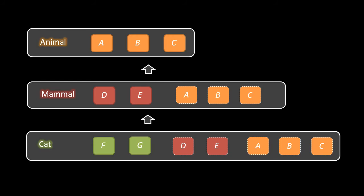We also have the terms Parent and Child. A Parent is a direct, immediate ancestor, and a Child is a direct, immediate descendant. So Animal is a parent of Mammal and Mammal is a child of Animal, but Animal is not a parent of Cat — nor Cat a child of Animal — because the inheritance in that case is not direct, only indirect through Mammal.